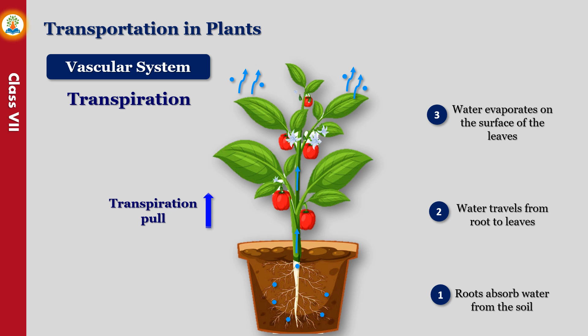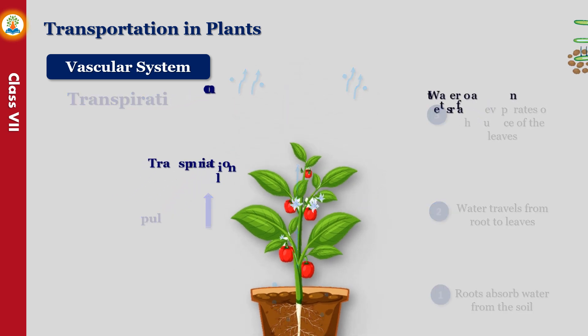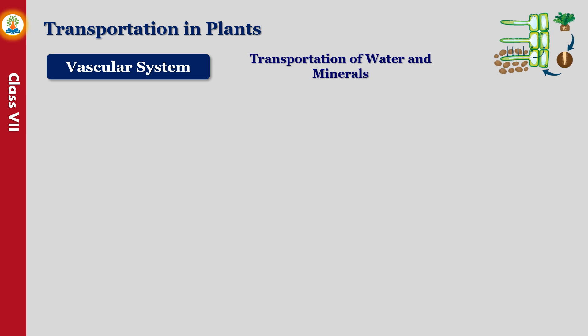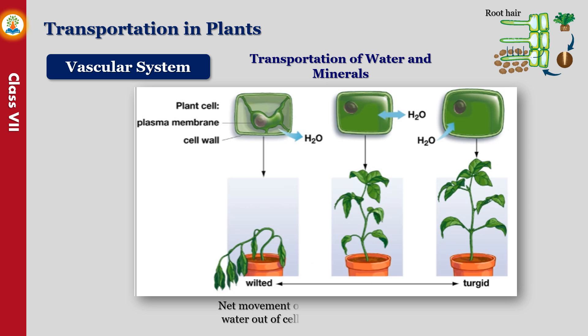This is called transpiration pull. The roots of plants have tiny outgrowths from their outer cells called root hairs. Root hairs are the passage point for water and mineral salts to enter into the roots. The root hairs increase the surface area of roots, which leads to absorption of an increased amount of substances.